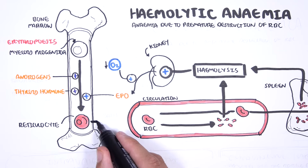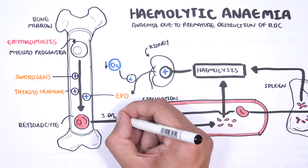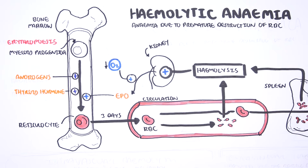Reticulocytes are premature red blood cells which are still able to synthesize proteins. After about three days, reticulocytes enter circulation where they mature and become erythrocytes — anucleated cells with no nucleus. The typical lifespan of a red blood cell is approximately 120 days, or four months. During this time, red blood cells circulate through the spleen repeatedly, subjected to remarkable mechanical stress. Eventually, as they age or get injured, they are cleared by the reticuloendothelial system.